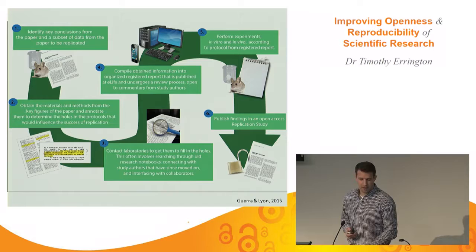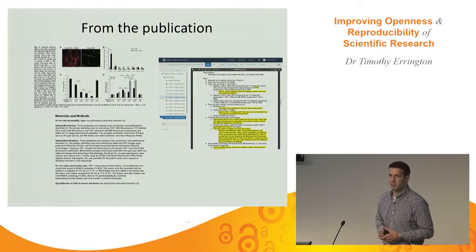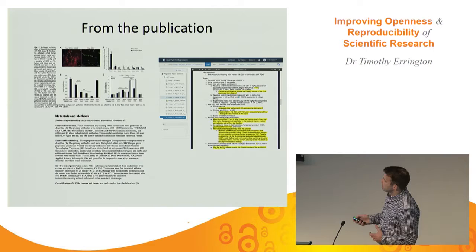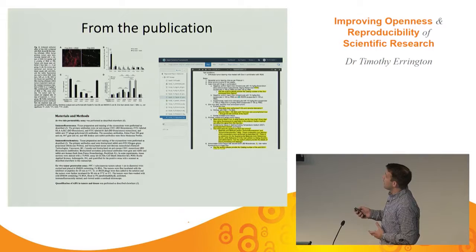Starting from our process: we started with the papers — their figures, representative images, and materials and methods sections that commonly referred to another paper. We tried to figure out what they actually did, and came up with a list — highlighted in yellow — of a lot of questions that we ourselves knew were missing from the paper.